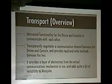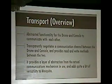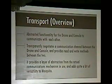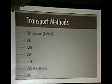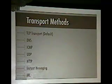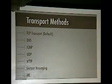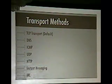Transport is an abstract functionality for the console and the drone to communicate with each other. It transparently negotiates a communication channel and provides read and write methods — read and write are separate. It's really neat because we can use different transport methods for different channels. We have TCP transport implemented as default, but we have skeleton code to implement DNS transport, ICMP transport, UDP transport, and HTTP transport. So if you can only go out by ICMP, you can mix and match however you want.